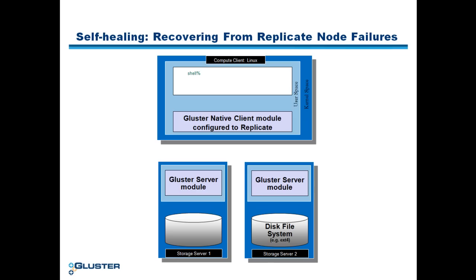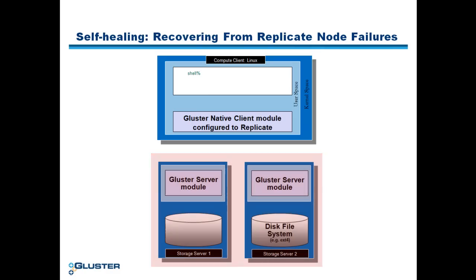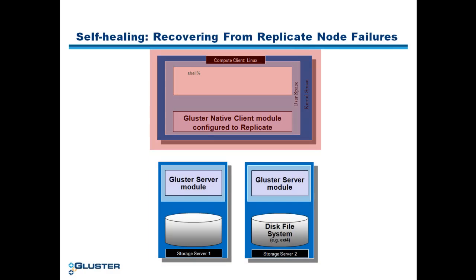The setup here is the same as in a prior tutorial: a replicate volume spanning two storage servers and a single client that has mounted the volume using the Gluster native client protocol.